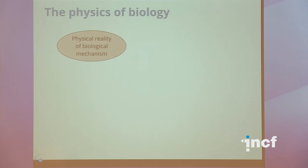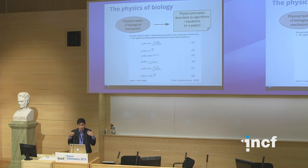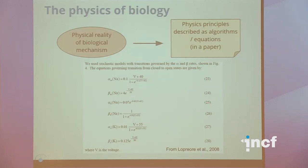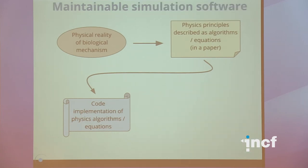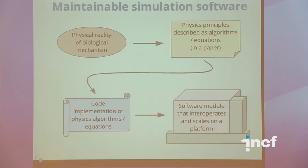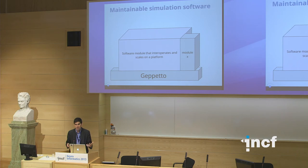The basic progression looks like this: there's a physical reality of biological mechanisms, scientists look into that and pull out principles relating to physics and underlying mechanisms, writing that up in papers, and sometimes in the computational realm turning those observations into code. But we're not done when we have a code implementation — we need to turn that into a software module that interoperates and scales on a platform. We've been working on open source platforms; one is called Geppetto, you can check it out at geppetto.org. It's early days, but it's playing with the idea of how to make things that can be developed independently and then hooked together into modules.